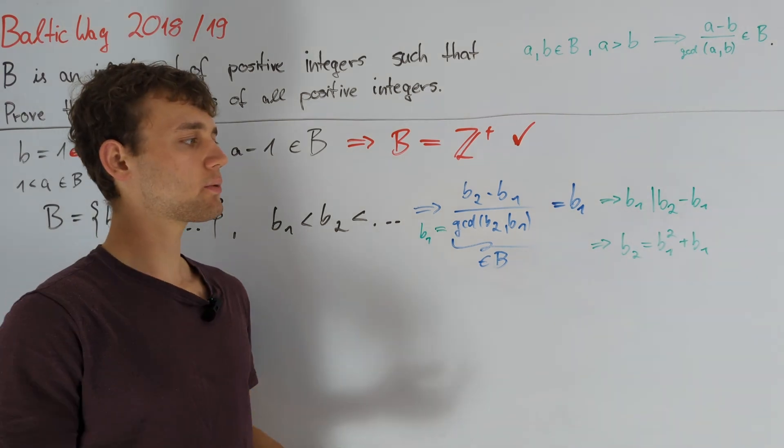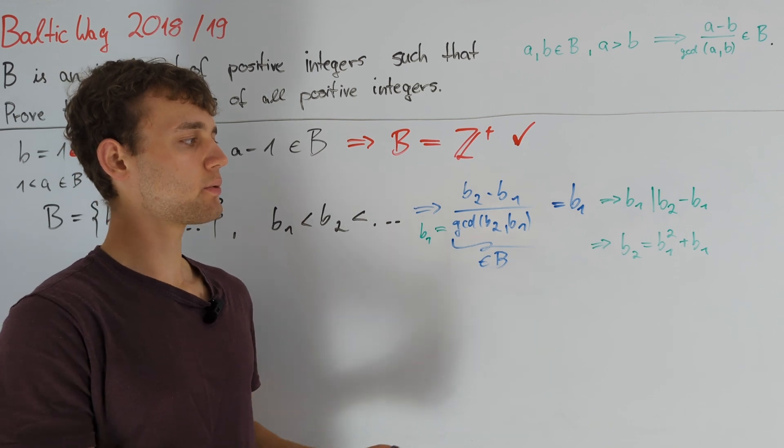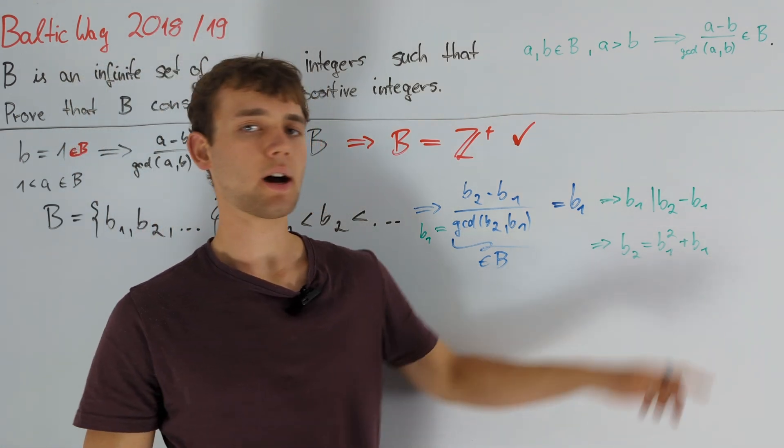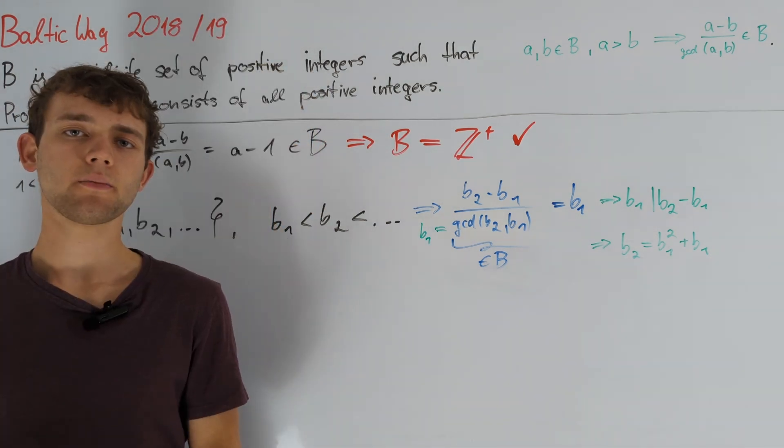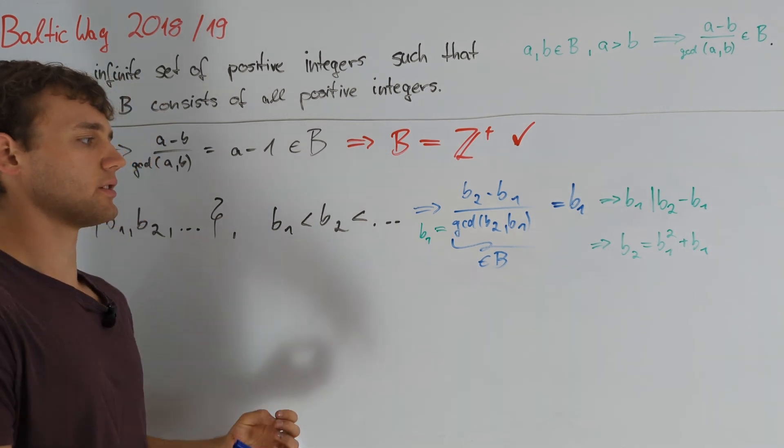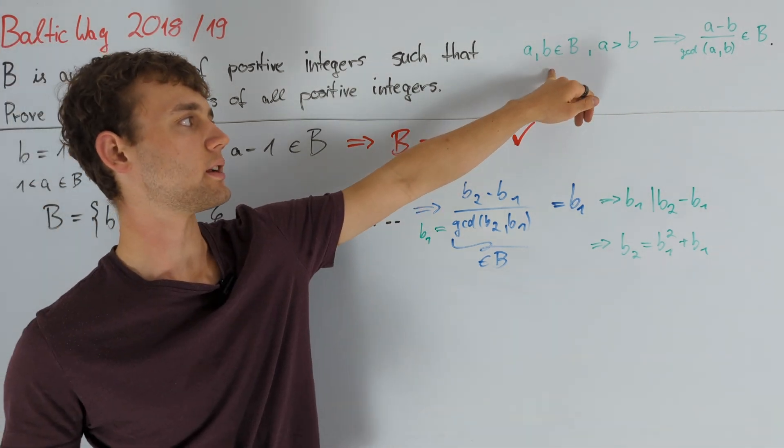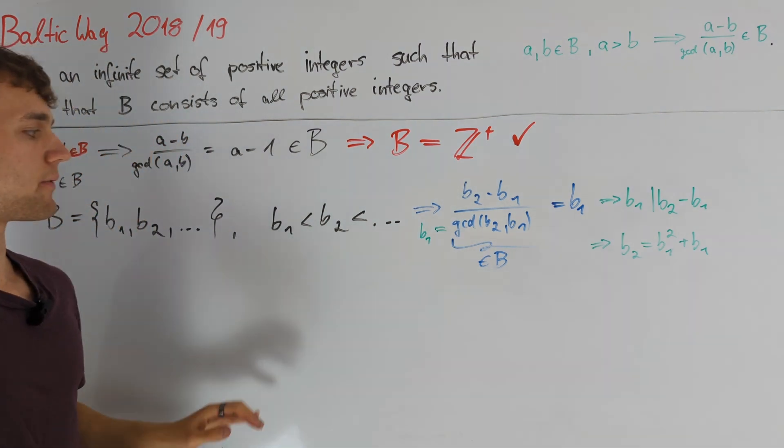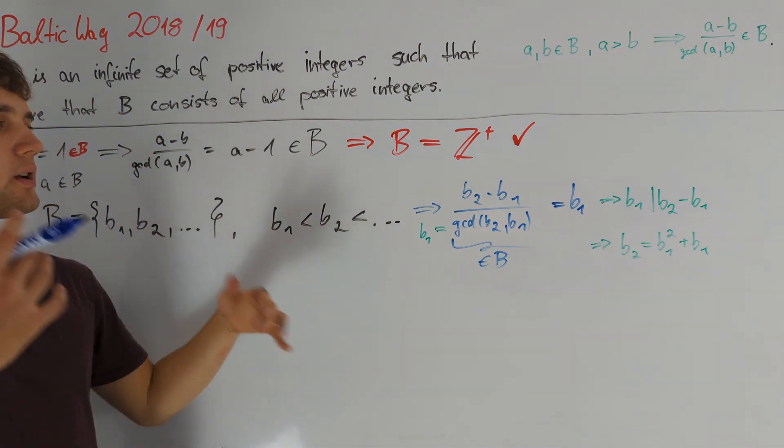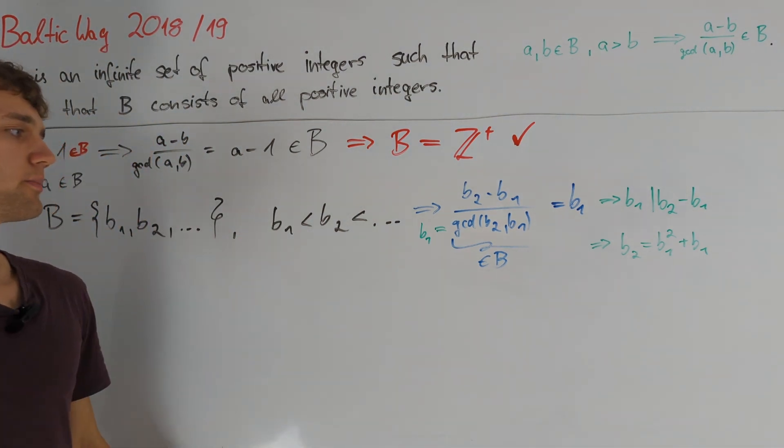So, we know that b1 squared plus b1 is in B, and all the values between this and b1 are not in B. This is nice to know, but the question now is, how do we continue? Since we want to keep working with this condition on small elements of B, and since we have used up b1 and b2, the idea is to introduce b3.